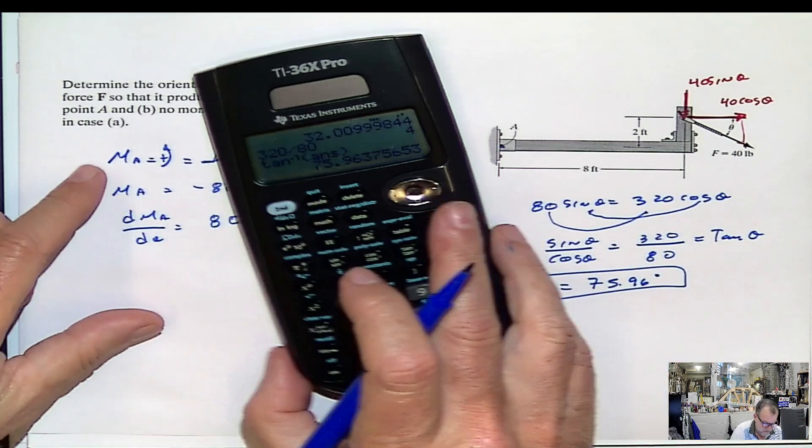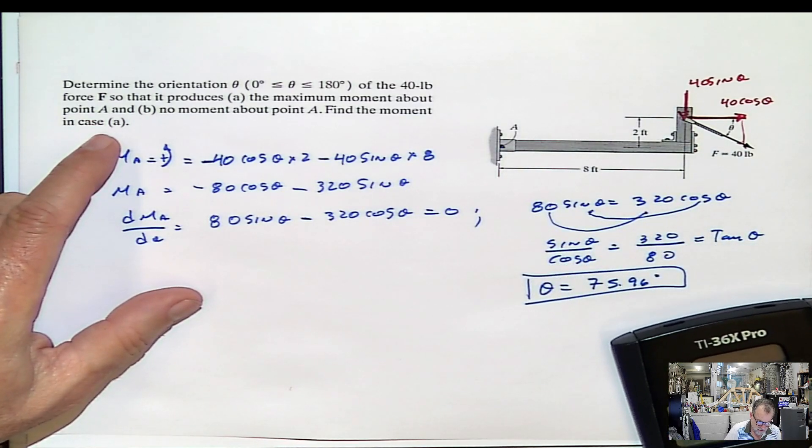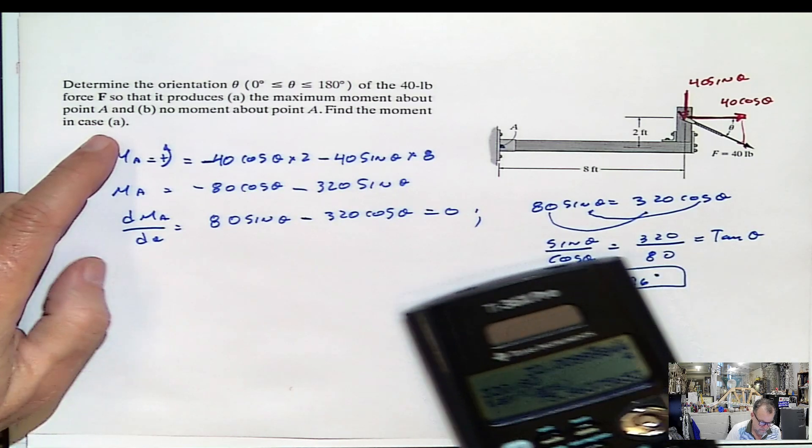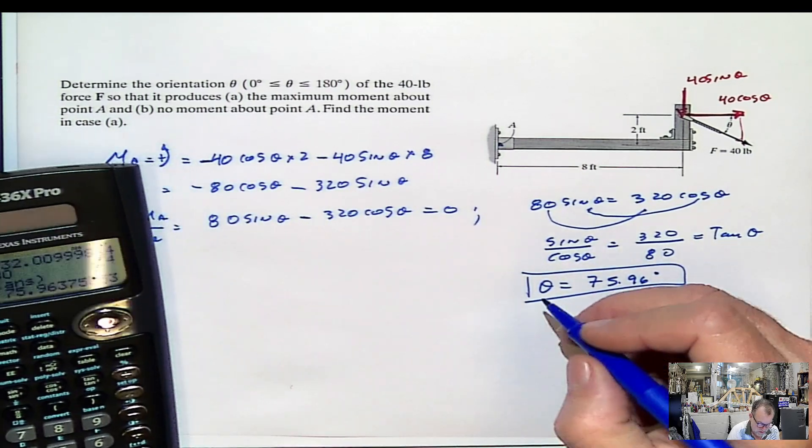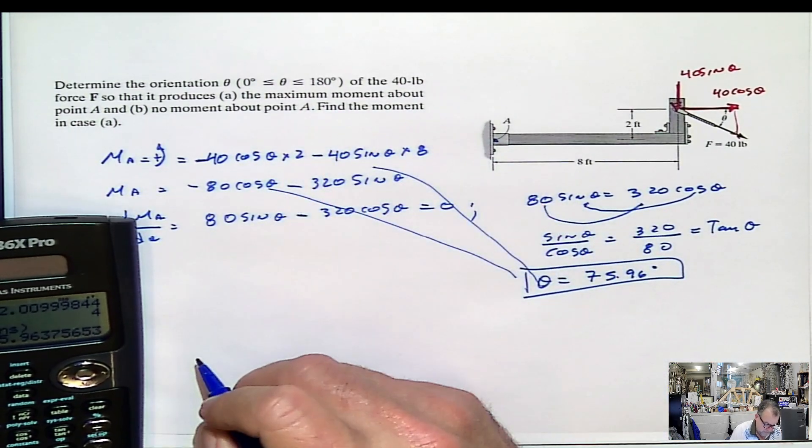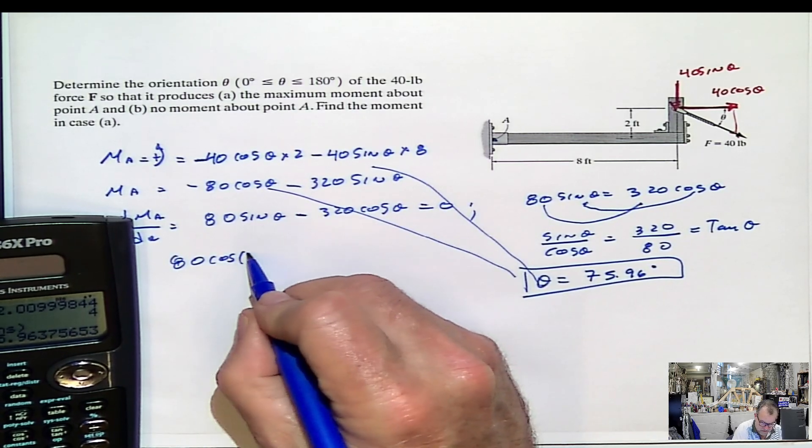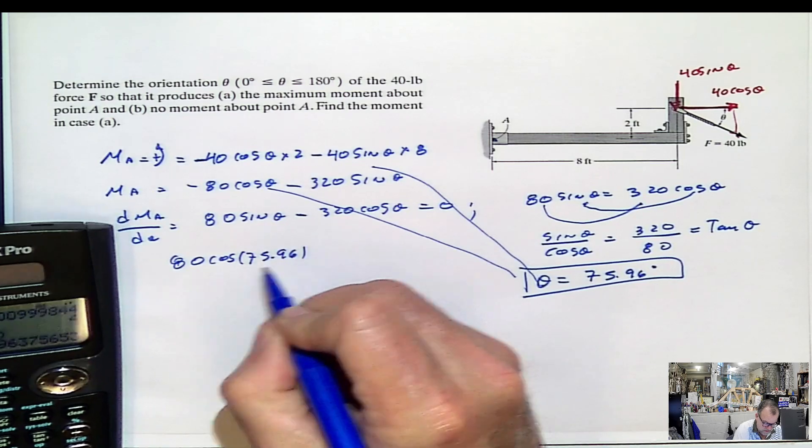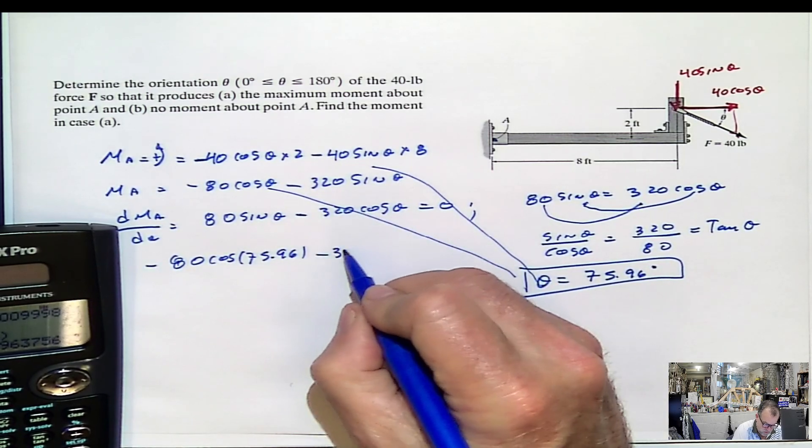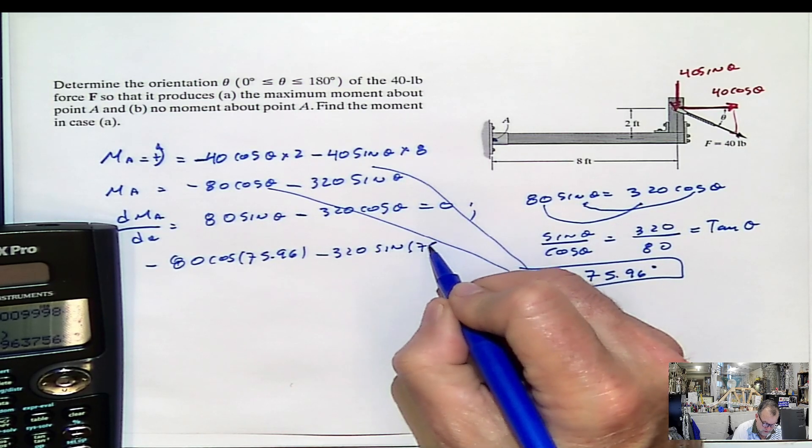How much is the moment? That's the part that is asking here. What is the moment at A? Well, in order to find the moment at A, I just have to plug this back into this equation. And it's going to be 80 cosine of 75.96 negative minus 320 sine of 75.96.